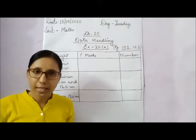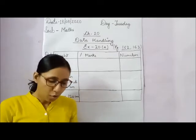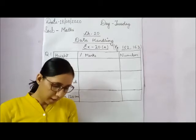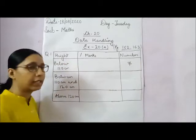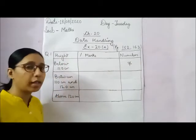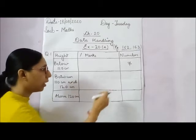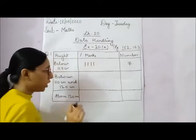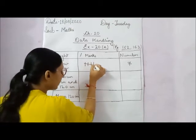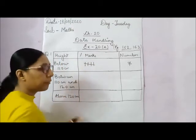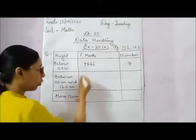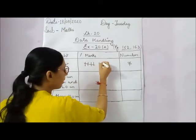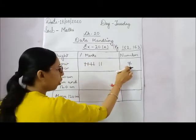First, we will count below 110 cm. Take a pencil and cross out the numbers once you count. Below 110 cm, there are 7 numbers. For 7, we make tally marks: 1, 2, 3, 4 lines — we always make 4 lines first. The 5th line is a slanting line, which shows 5. Then for 7, we count after 5: 6, 7. So this complete set of lines shows 7 numbers.